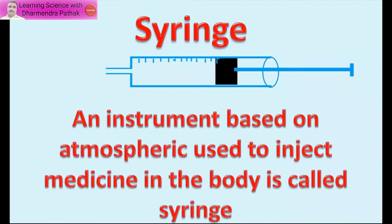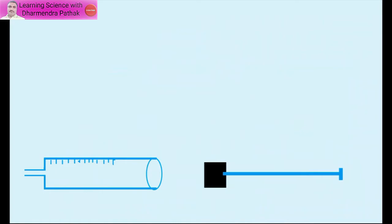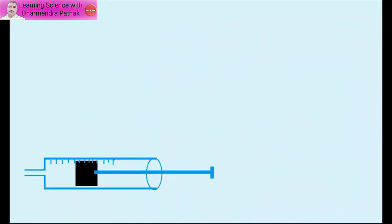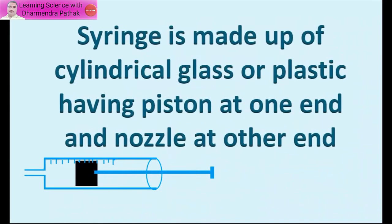A syringe is an instrument based on atmospheric pressure used to inject medicine into the body. It is made up of glass or plastic — cylindrical in shape with a piston at one end and a nozzle at the other end.